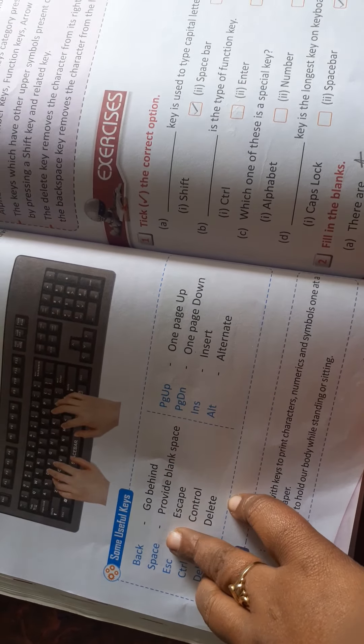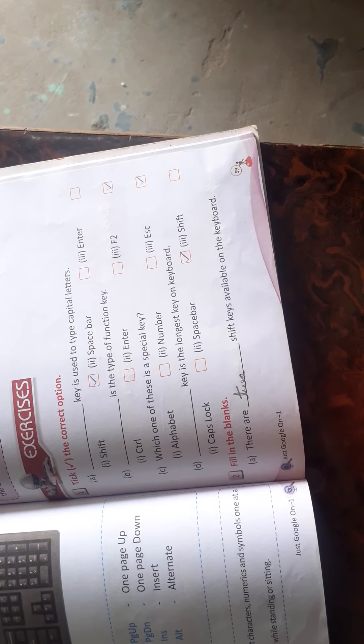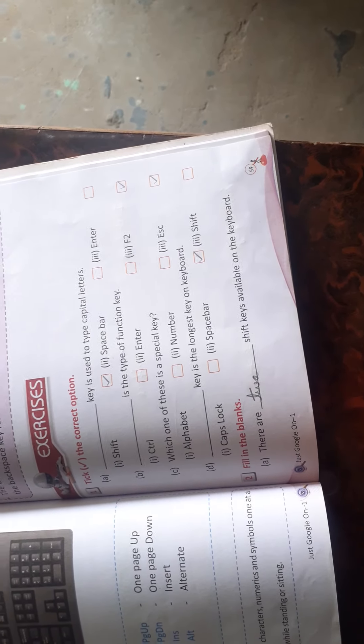Number keys are total twenty in number. There are total five categories of the keys on the keyboard.